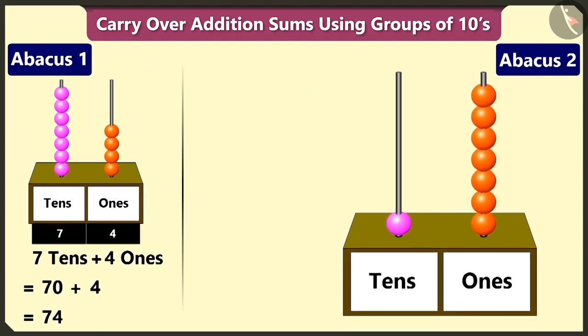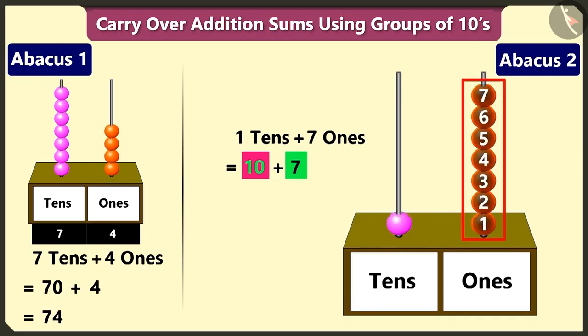And in the second abacus, in the tens box, there is 1 bead. This makes it 1 ten. In the ones box, there are 7 beads, that is 7 ones. So adding 1 ten and 7 makes 17.